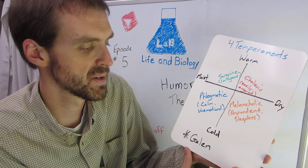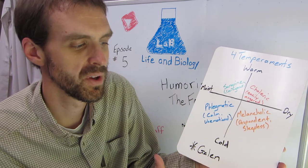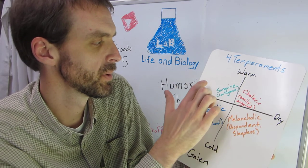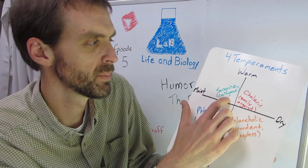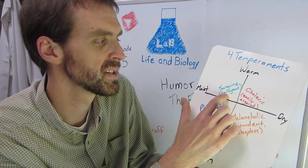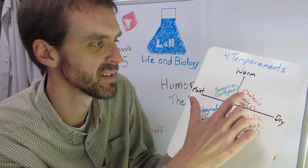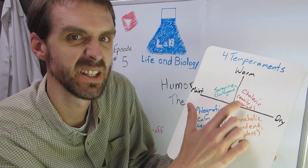But he stretched the four humor ideas to also include the four temperaments. So moist and warm, this would be sanguine, which is kind of a courageous type of temperament. Warm and dry is choleric, it's easily angered.